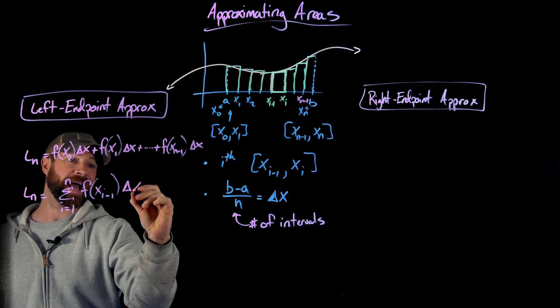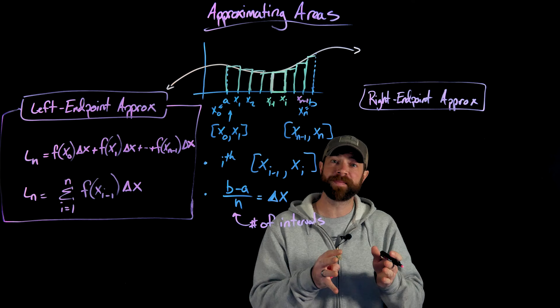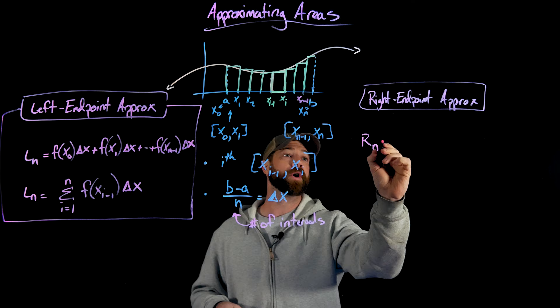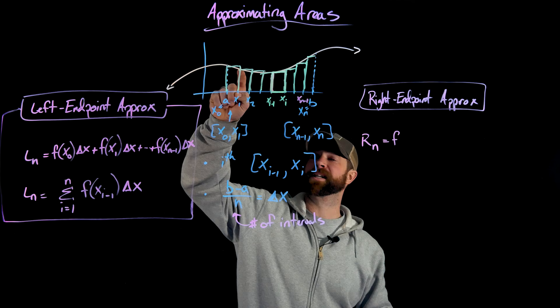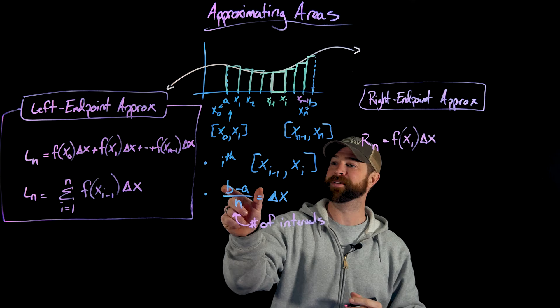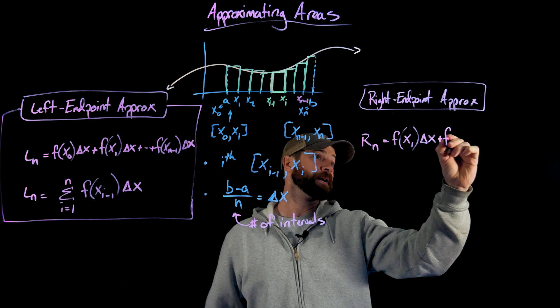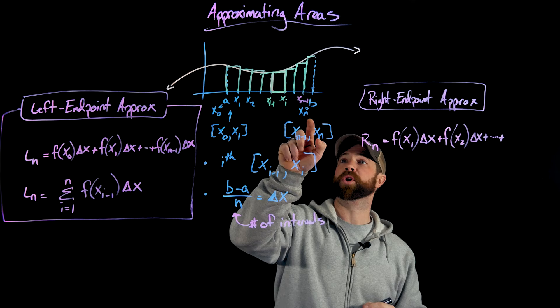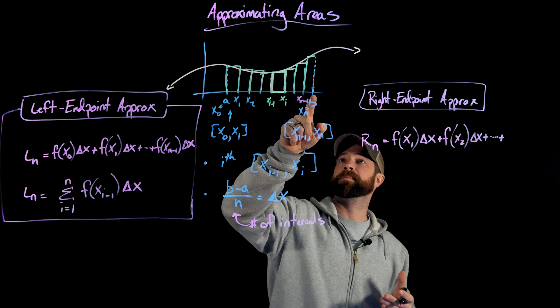Alternatively, using the right endpoint approximation, we choose the right endpoint of each sub-interval for the height of the rectangle. We denote this R sub N — right endpoint given N number of intervals. The first rectangle will be F of X sub one times delta X, the second will be F of X sub two times delta X, and the last will be F of X sub N — which is the same as B — times delta X.